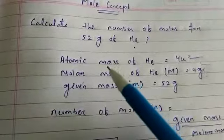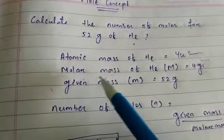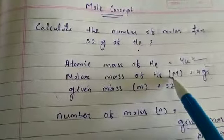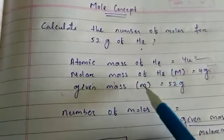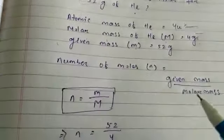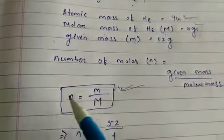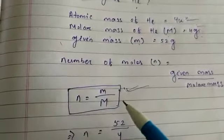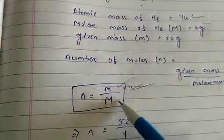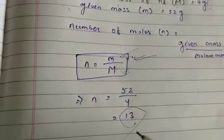When atomic mass or molecular mass is represented in grams, it is called molar mass. Molar mass is denoted as capital M, and given mass is small m. Molar mass is 4g and given mass is 52 grams. The formula for number of moles when mass is given: n = m/M (given mass divided by molar mass). Solving this, the answer is 13 moles.